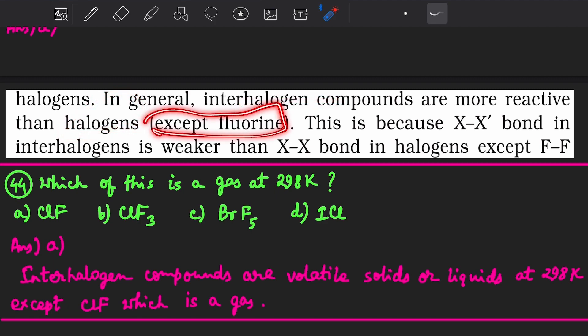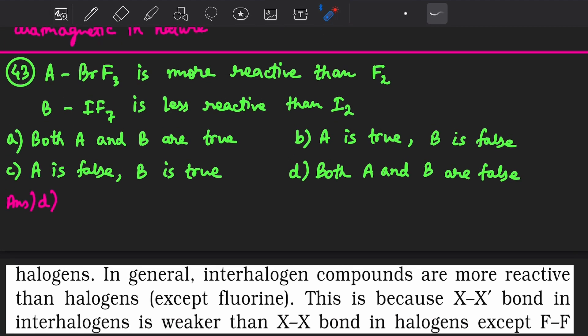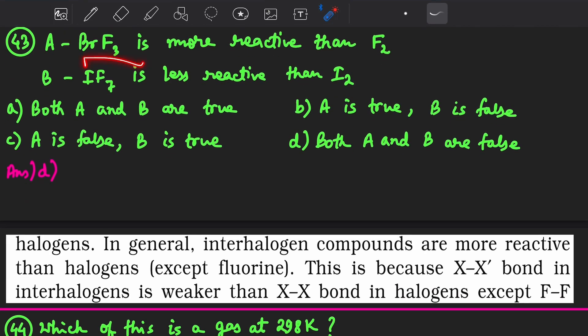So BrF3 will be less reactive than fluorine because the F-F bond is weaker than interhalogen bonds. But IF7 will be more reactive than iodine because the bonds in IF7 are much weaker than the I2 bond.